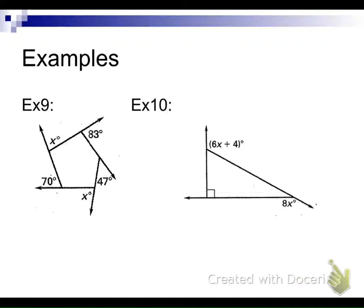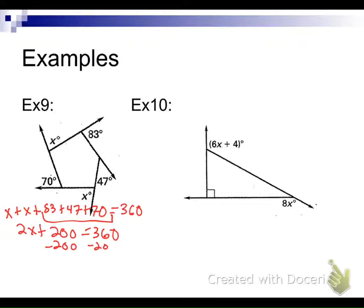So our first step is to do what? So X plus X. Hey, guys, let's let him walk us through it. X plus X plus. Okay, finish it up. Okay, so Bree's answering it now. What's the sum equal to? 360. Okay, so you end up with 2X plus. What are all these angles add up to? 200. 200 equals 360. Nice job, both of you.